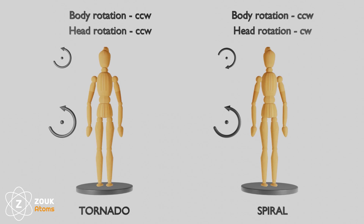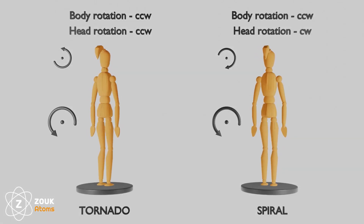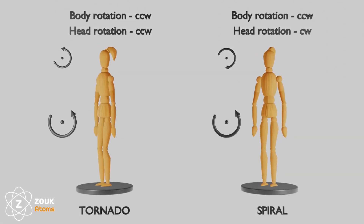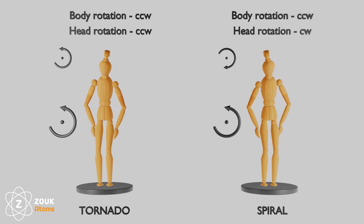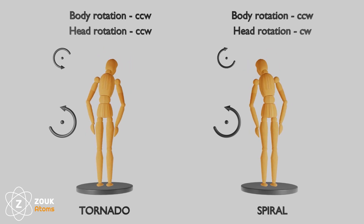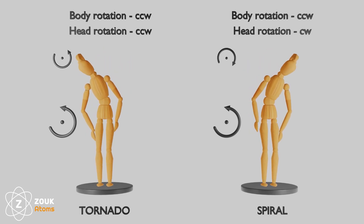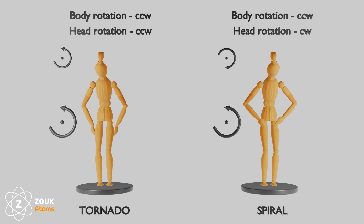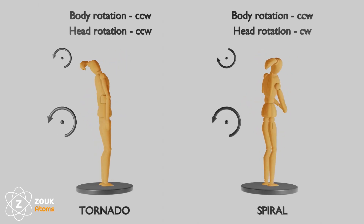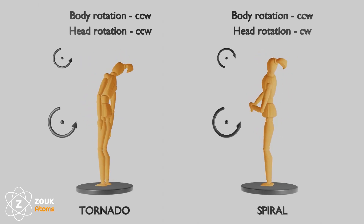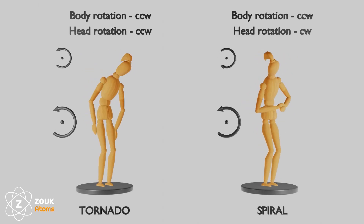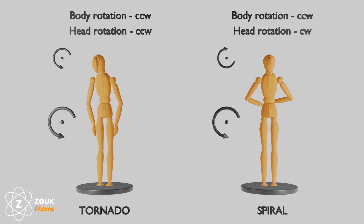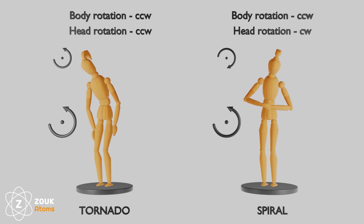In the animation you can see on the left side one tornado, where the body and the head of the follower are rotating both counter-clockwise in the same direction. On the right side you find one example of a spiral or roasted chicken, where the head and the body are rotating in opposite directions.